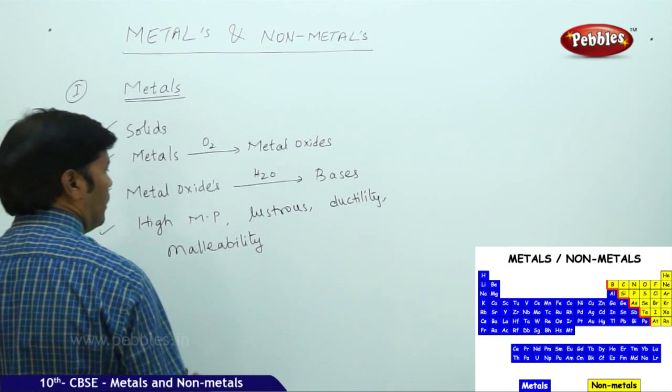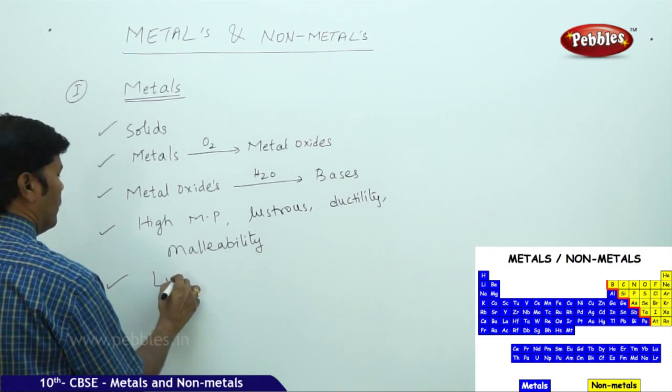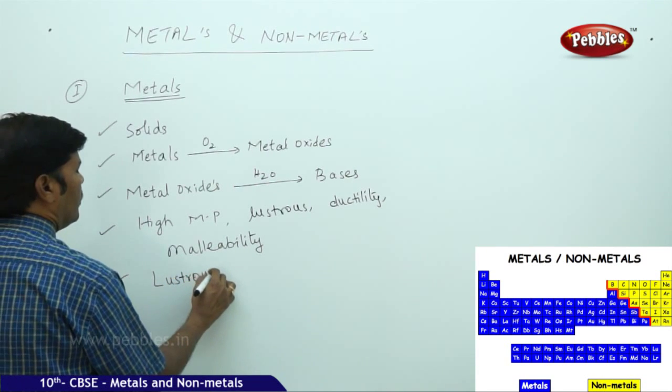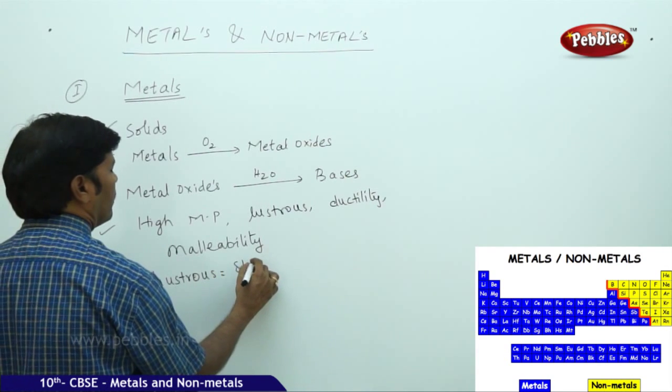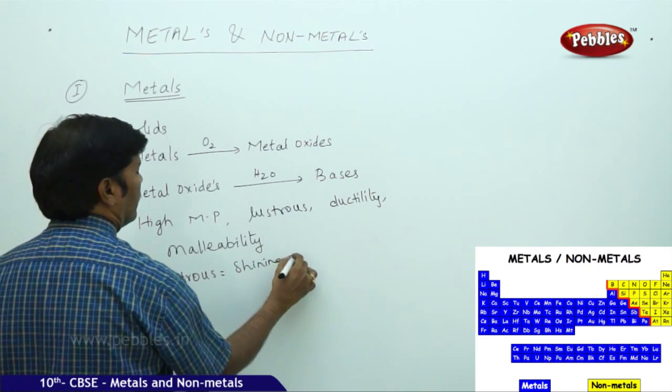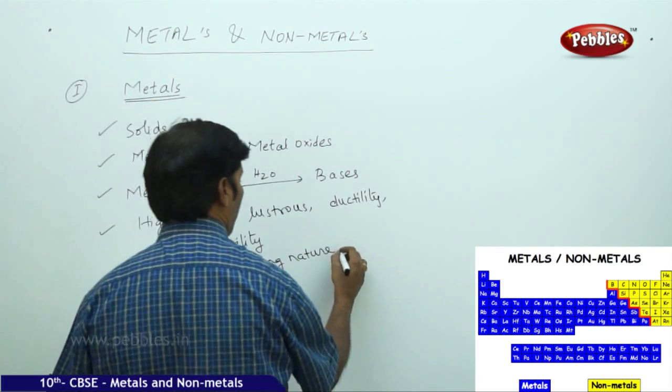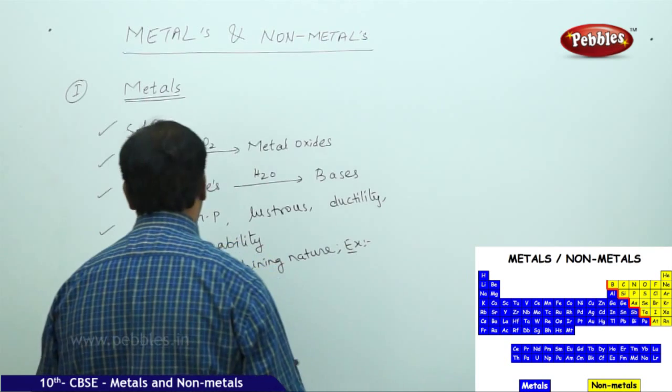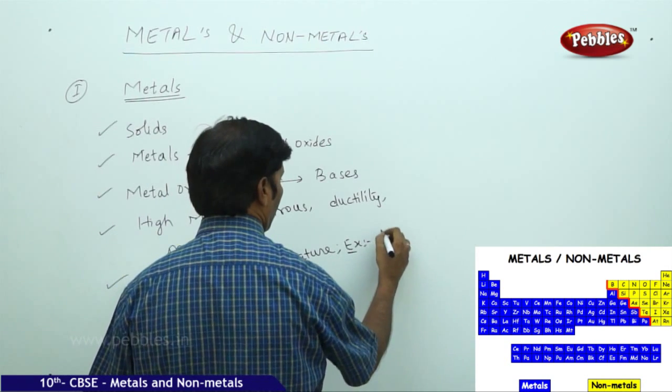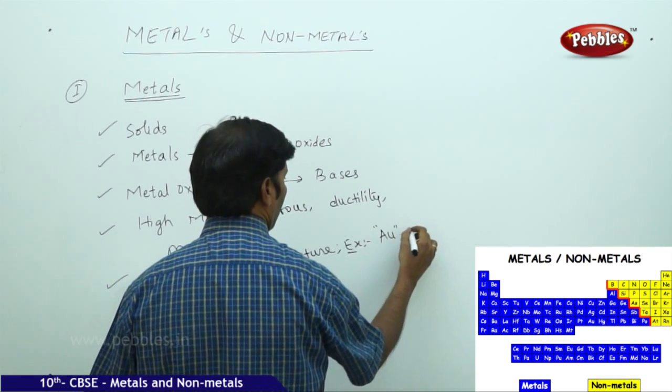If you take lustrous nature, it is shining nature. For example, you can take gold and silver - they are lustrous.